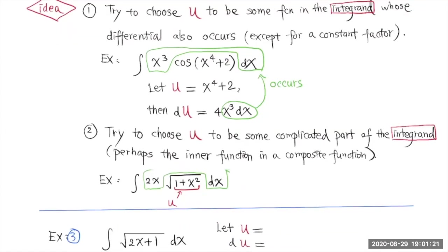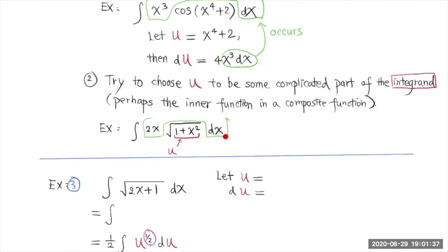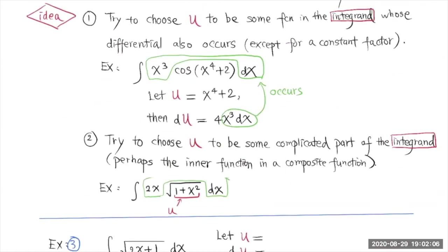The second idea is to try to choose u to be some complicated part of the integrand — perhaps the inner function in a composite function. For example, in this integral, this is the inner function inside the square root. We want u to be this complicated part, and if it becomes a single variable, then it's less complicated.